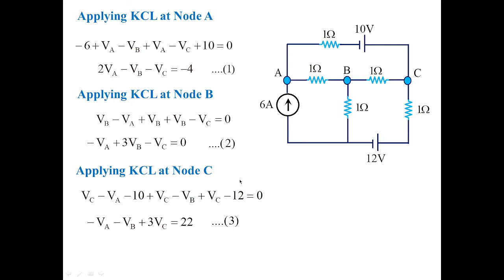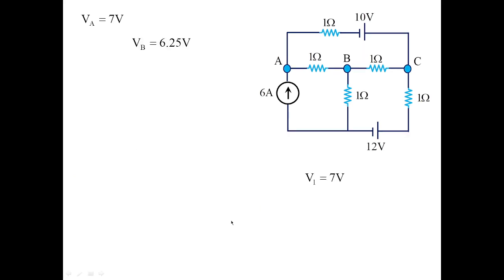Solving equations 1, 2, and 3, we get VA equals 7 volts, VB equals 6.25 volts, and VC equals 11.75 volts. Renaming the node voltages: V1 equals VA equals 7 V, V2 equals VB equals 6.25 V, and V3 equals VC equals 11.75 V. These are the node voltages obtained.